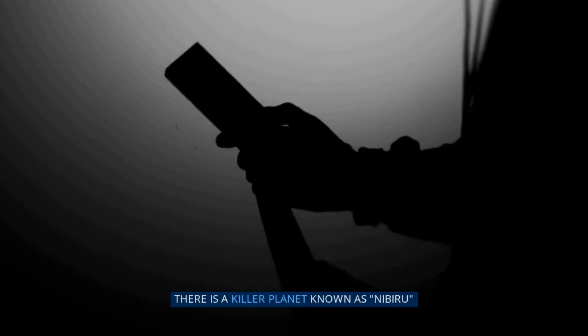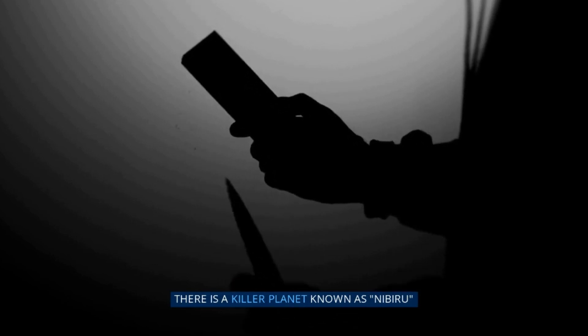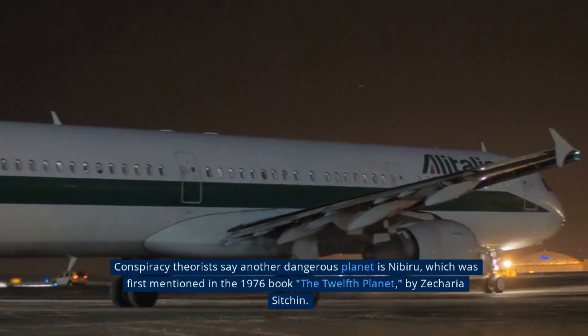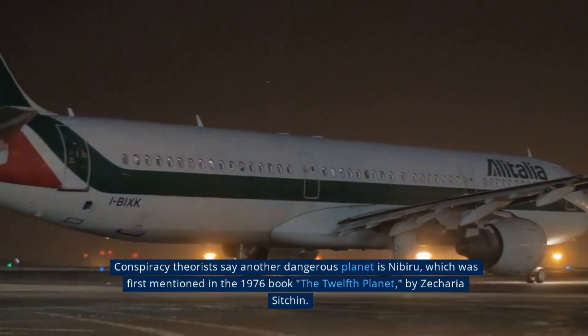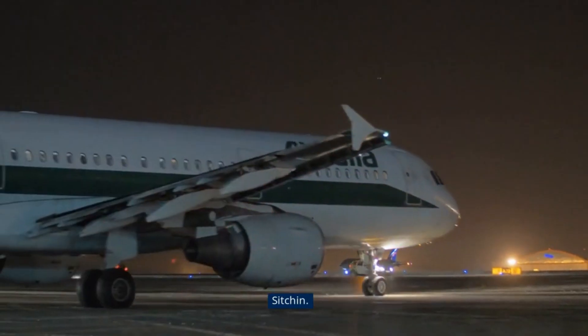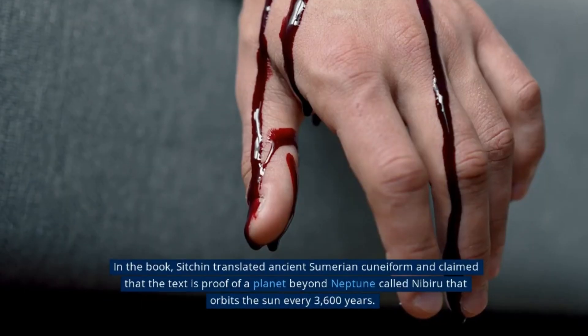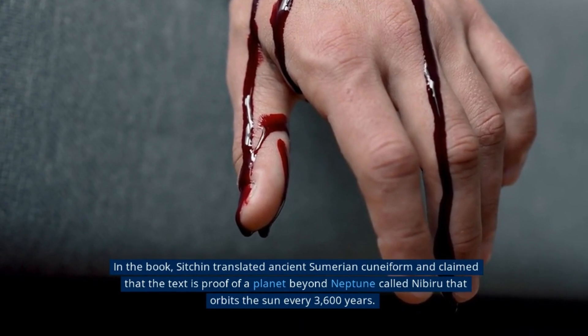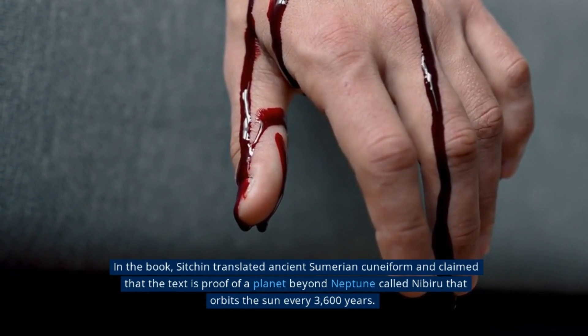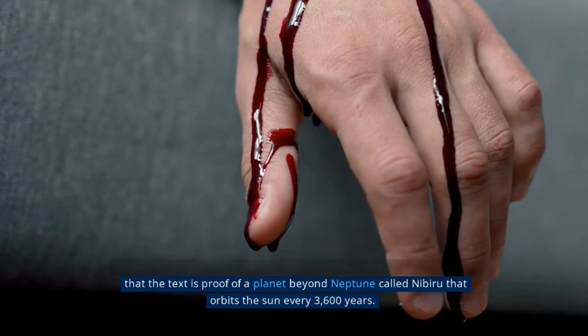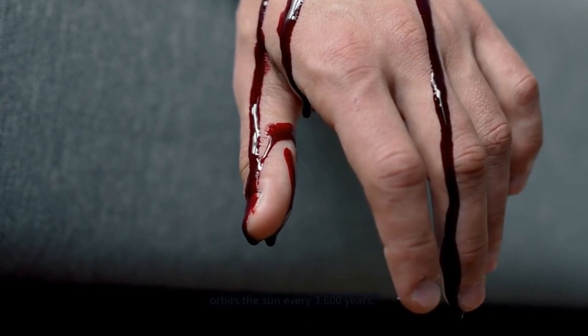There is a killer planet known as Nibiru. Conspiracy theorists say another dangerous planet is Nibiru, which was first mentioned in the 1976 book The Twelfth Planet by Zecharia Sitchin. In the book, Sitchin translated ancient Sumerian cuneiform and claimed that the text is proof of a planet beyond Neptune called Nibiru that orbits the Sun every 3,600 years.